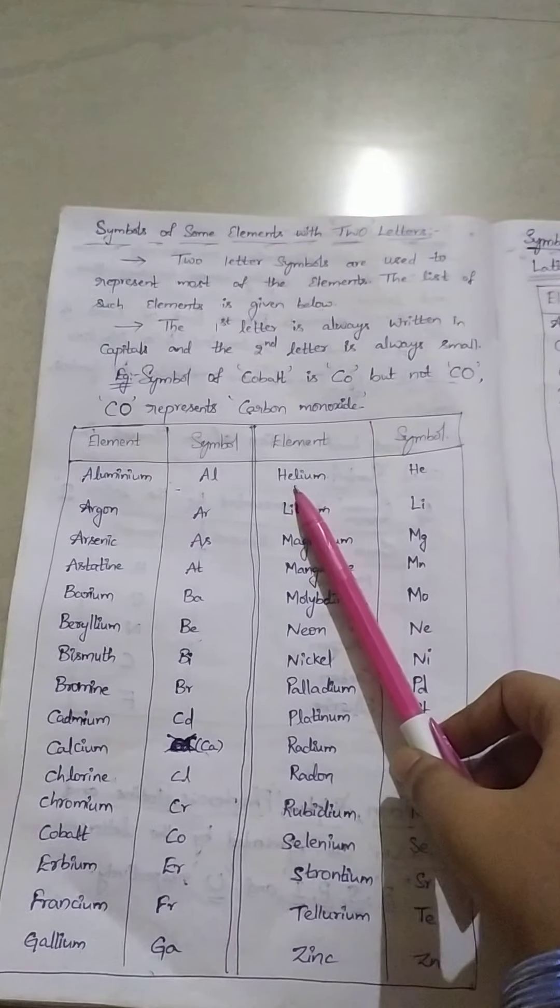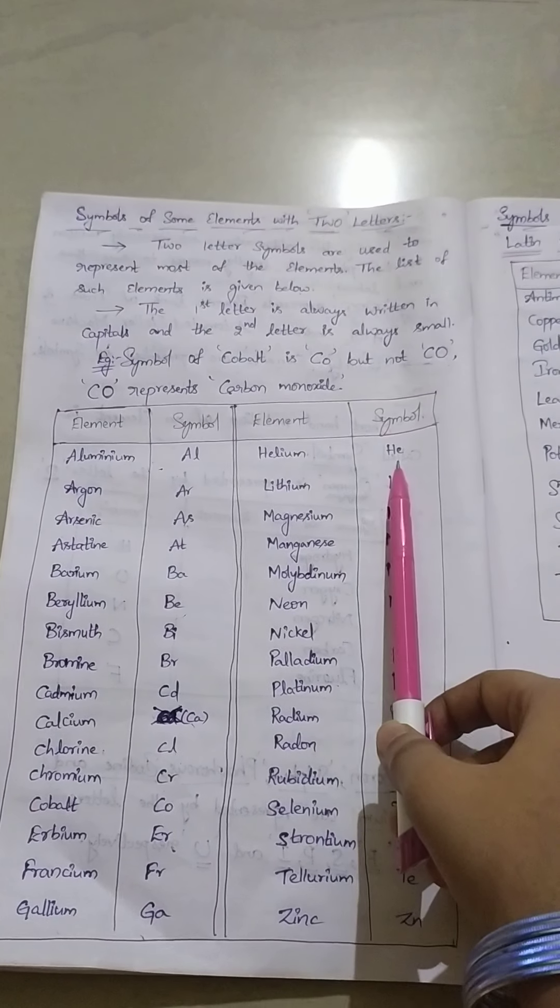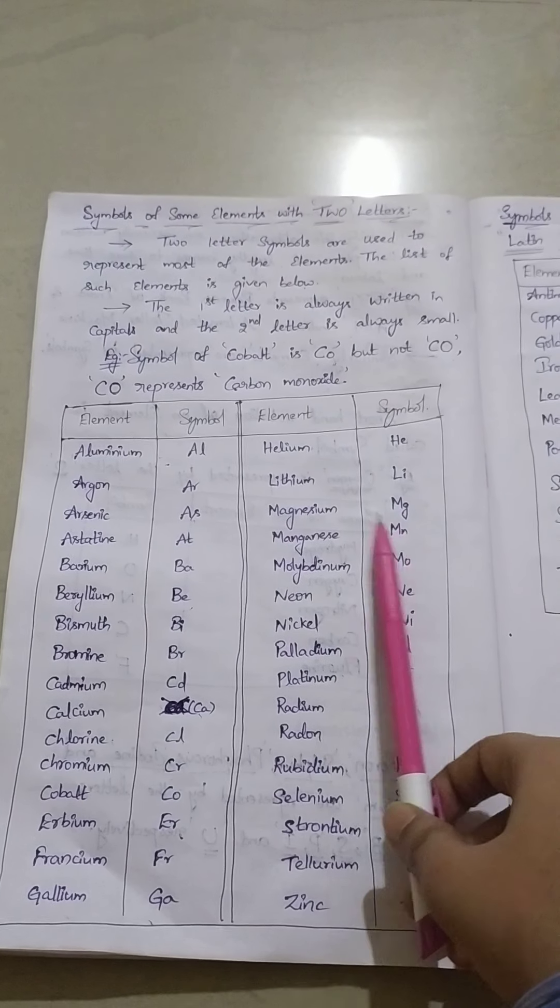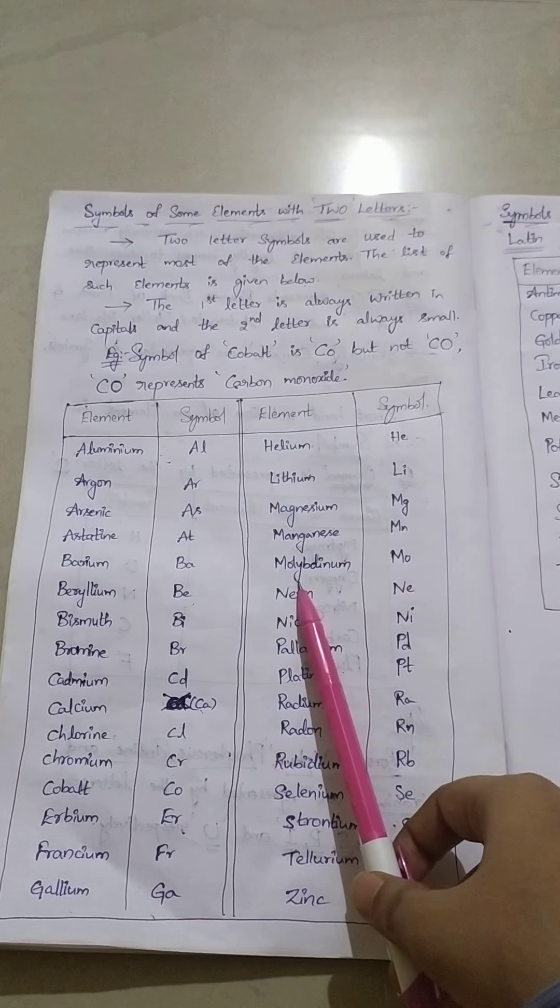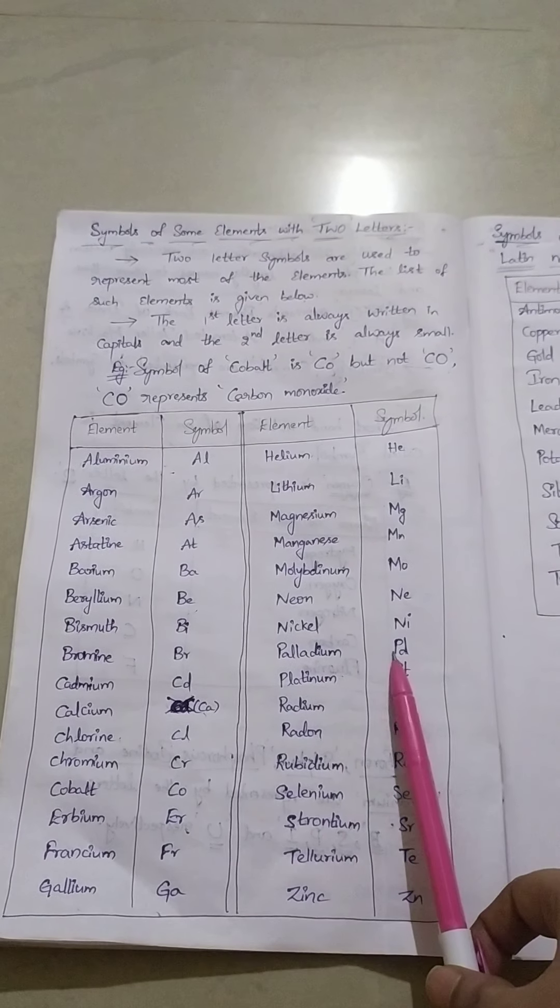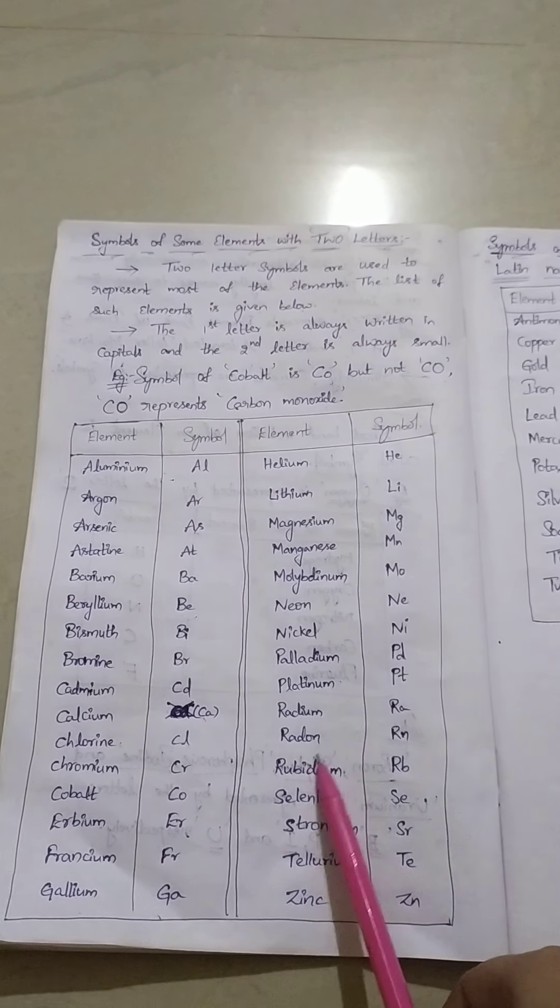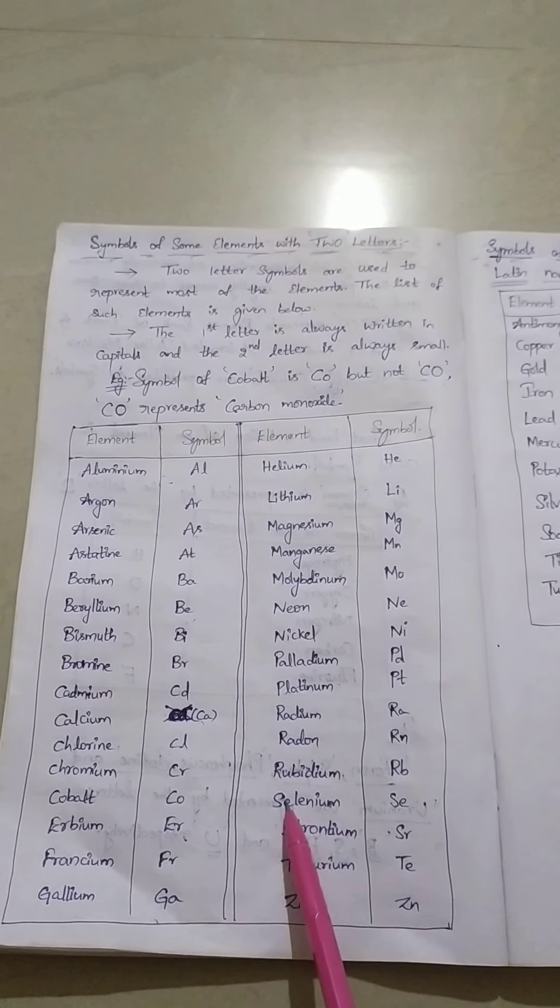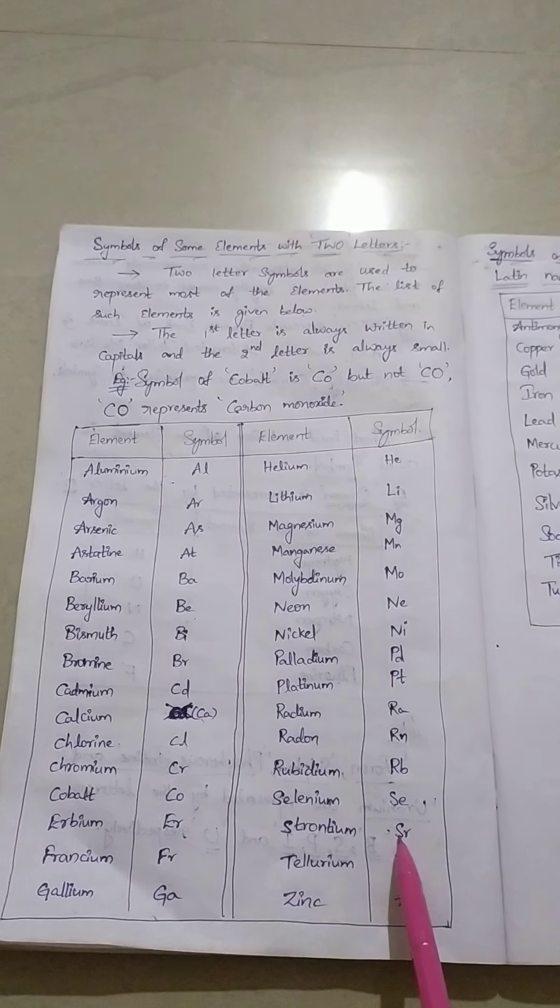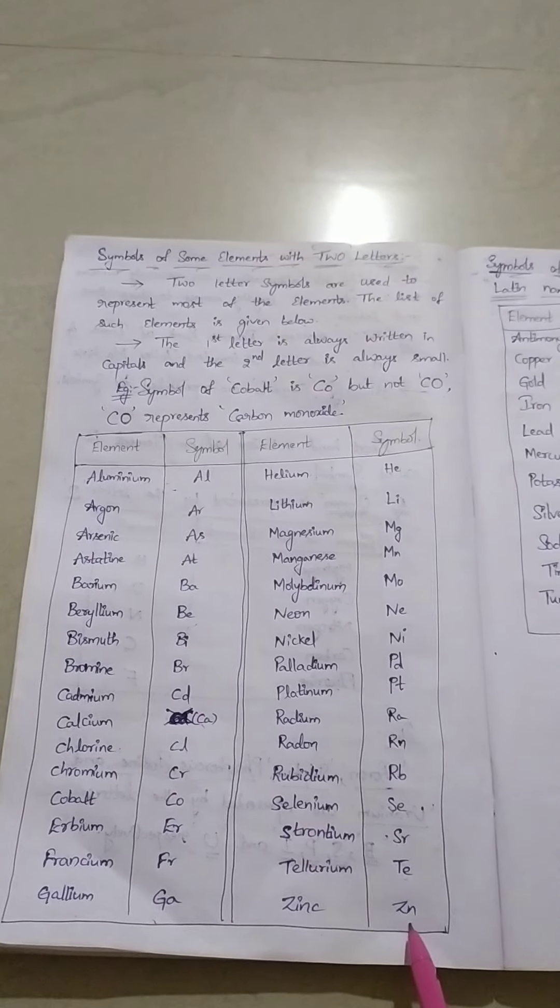A few more elements we will see. The symbol for the element helium is HE. Lithium is LI. Magnesium, MG. Manganese, MN. Molybdenum, MO. Neon, NE. Nickel, NI. Palladium, PD. Platinum, PT. Radium, RA. Radon, RN. Rubidium, RB. Selenium, SE. Strontium, SR. Tellurium, TE. Zinc, ZN.